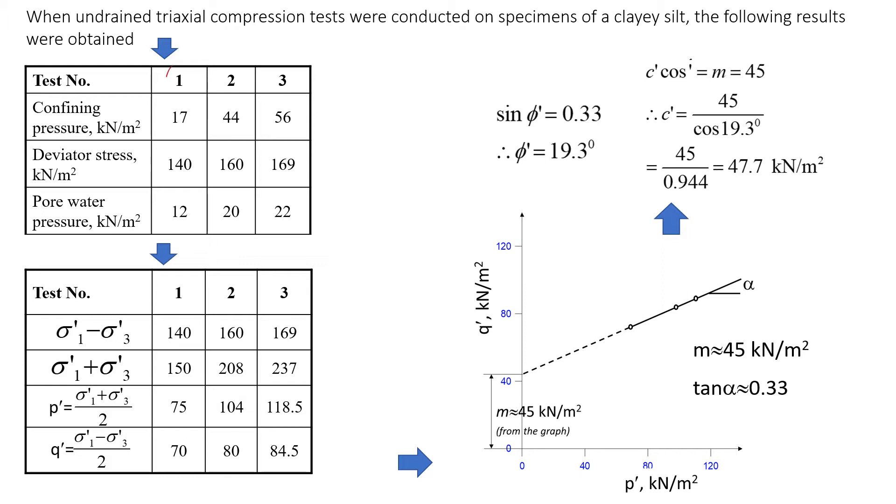This will be test 1, test 2, test 3. For each test we had the confining pressure. For test 1 it was 17 kN/m². Then we loaded the sample until it failed.